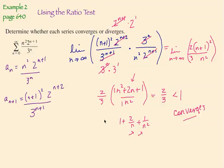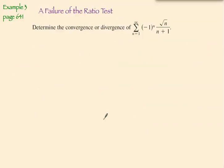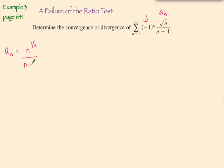Now let's see an example where the ratio test fails. We have an alternating series here — we could use the alternating series test, but let's try the ratio test. We're going to let a sub n equal n to the 1/2 over n plus 1, which means a sub n plus 1 will be n plus 1 to the 1/2 over n plus 2.